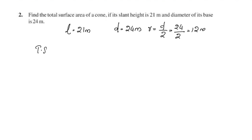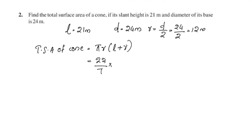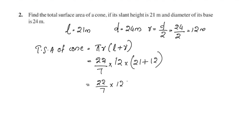The total surface area of a cone is equal to pi R into L plus R. So that is 22 by 7, R is 12, into L is 21 plus R is 12.